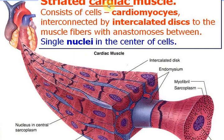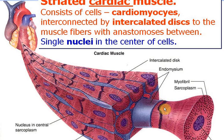Striated cardiac muscle, opposite to skeletal muscle, consists of cells — cardiomyocytes. They are interconnected by intercellular connections to form functional muscle fibers, with anastomoses between them, and there are single rod-shaped nuclei in the center of the cells.